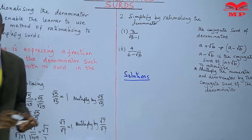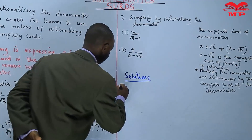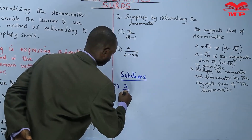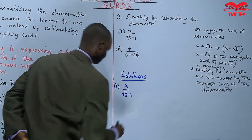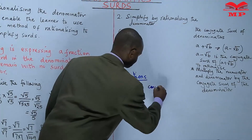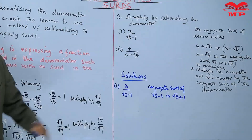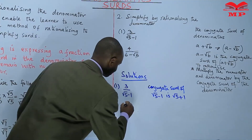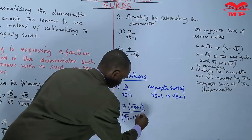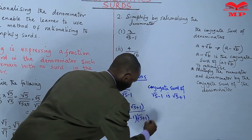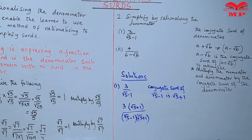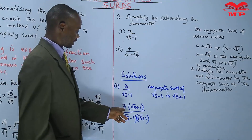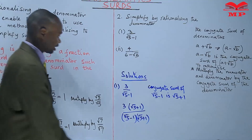So in the solutions, in number 1 we have 3 over square root of 5 minus 1. And since I've told you, you multiply the numerator and the denominator by the conjugate surd of the denominator, which is square root of 5 plus 1. So you multiply both the numerator and the denominator by that conjugate surd.